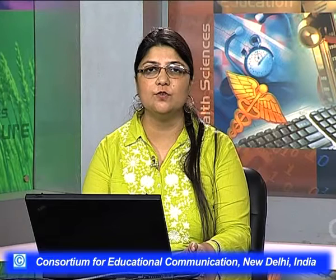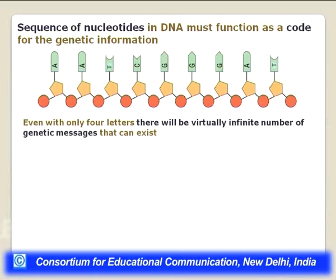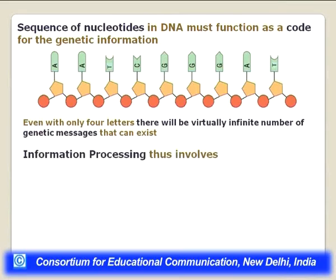The sequence of nucleotides in DNA must function as a code for the genetic information. You may ask how only four nucleotides — A, G, C, and T — can store such a vast variety of genetic information. Even with only four letters, there will be virtually infinite possible genetic messages, because the arrangement of these four nucleotides in the DNA sequence is the key for all the information stored.